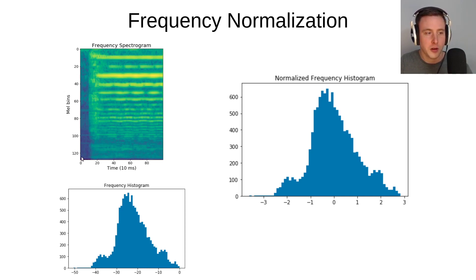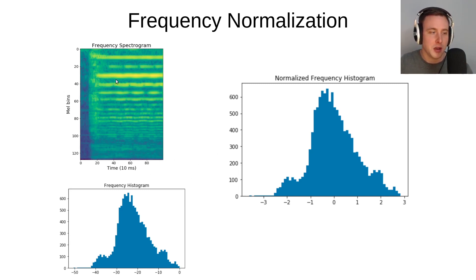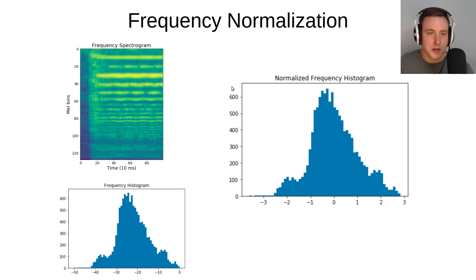On the x-axis we have time, and this dimension is going to be 100 because we chose a step size of 10 milliseconds for our mel spectrogram. When we make a histogram of all these values, this is what it looks like — remember this is a log-transform spectrogram, so these values are all negative.